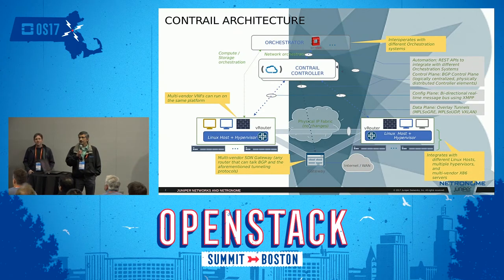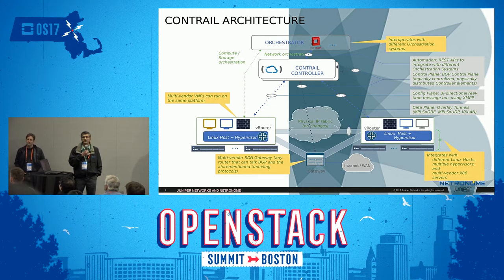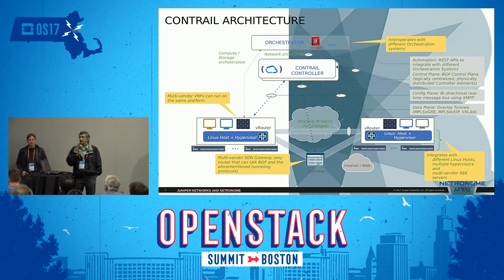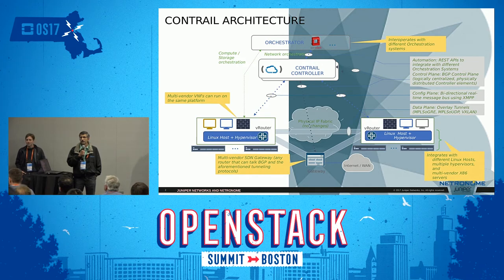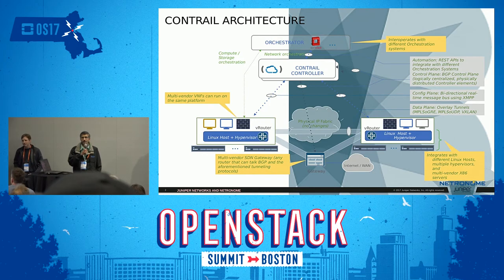Contrail allows you to create virtual networks on top of the physical network infrastructure, so you can provision new tenants and new applications without having to configure VLANs or security policies on the physical switches. The way we do that is by using overlay tunnels. One of our goals was to not invent any new protocols or encapsulations — we wanted to use standard protocols. So we support MPLS over GRE, MPLS over UDP, and VXLAN.